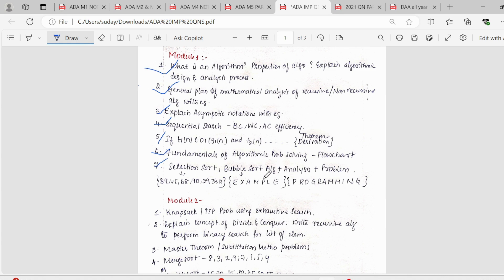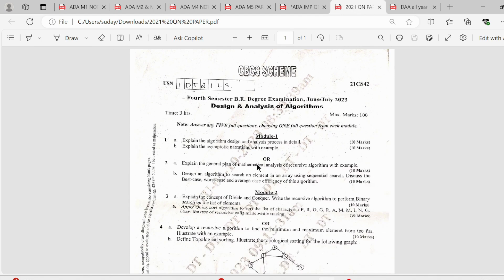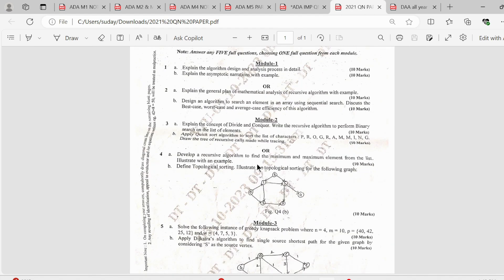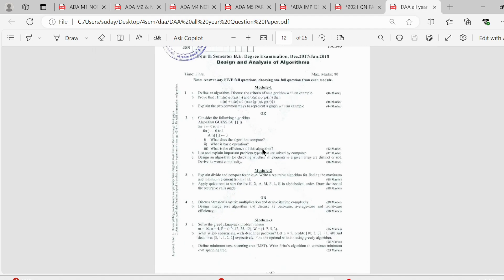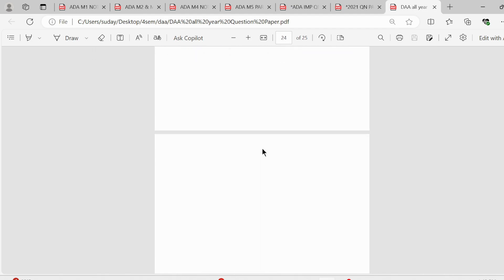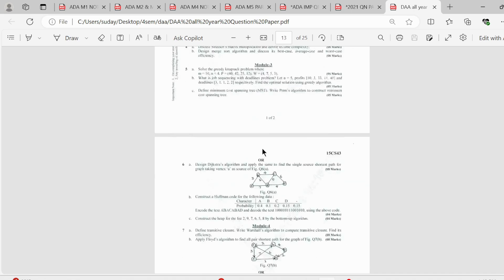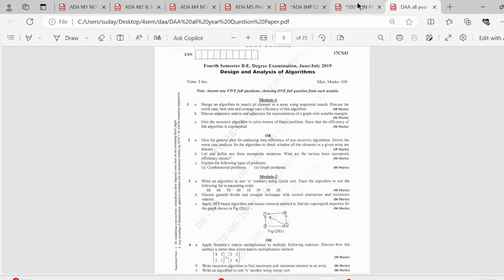Then we come to selection sort, bubble sort. So out of these two, one could be asked and analysis should be written, algorithm should be written and a problem would be there. So here is the 2021 scheme paper. So if you see, most of the questions which I've taken are from this paper itself. Along with that, I've also analyzed the previous year question papers and I've noted down the important questions. So this is about our first module.